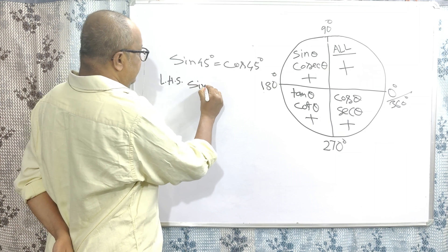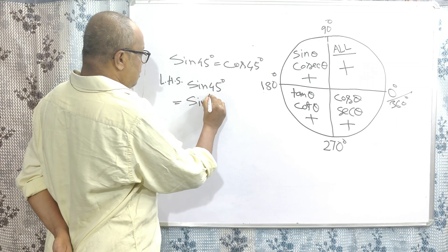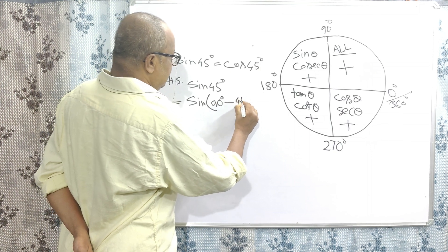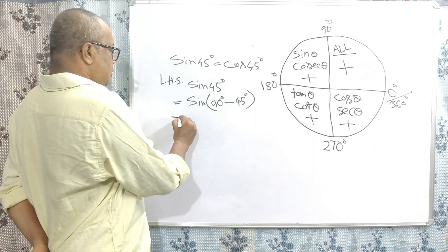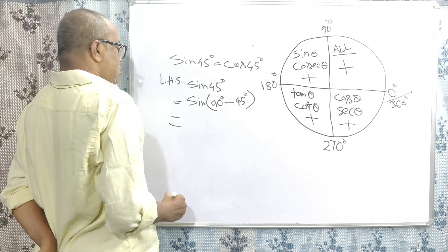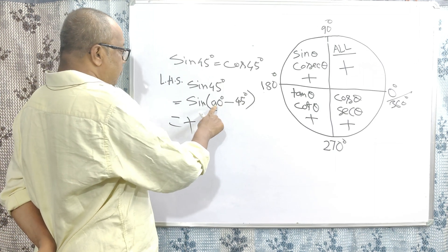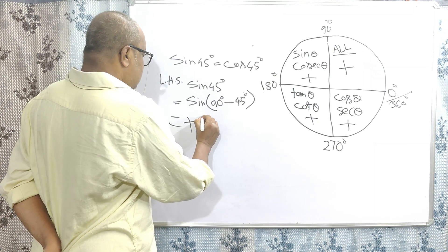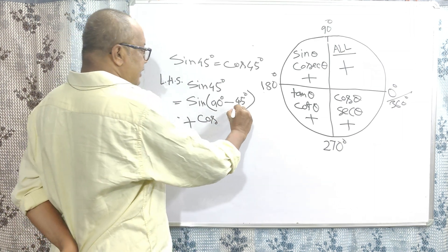Similarly, sin 45 degrees is equal to sin of 90 degrees minus 45 degrees. This angle falls in the first quarter, so the positive sign applies.